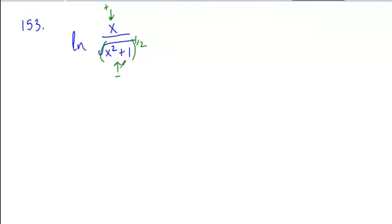So I have two different factors, one positive and one negative. So when I expand this out, I get a positive ln x, and I get a negative ln of x squared plus one to the one-half.